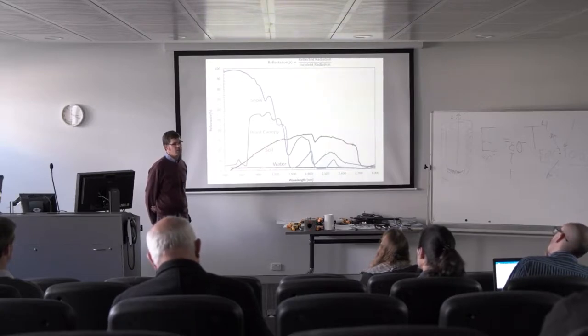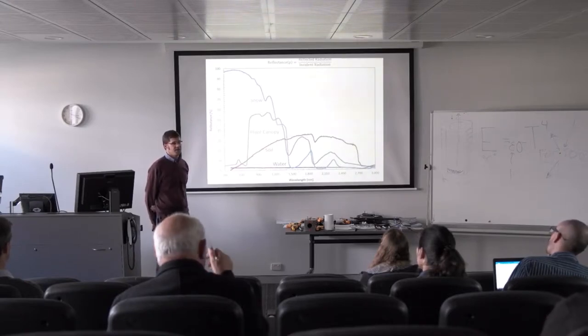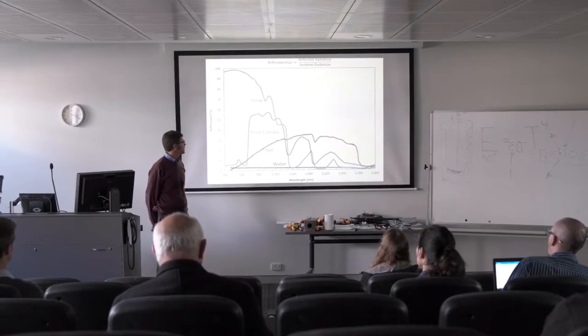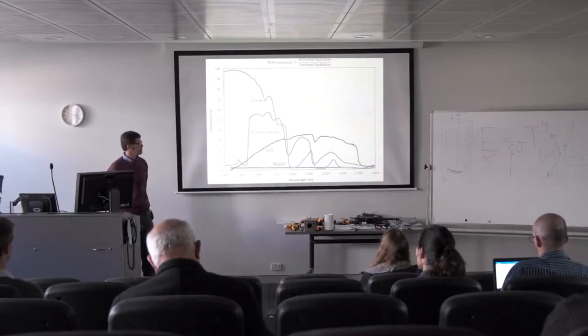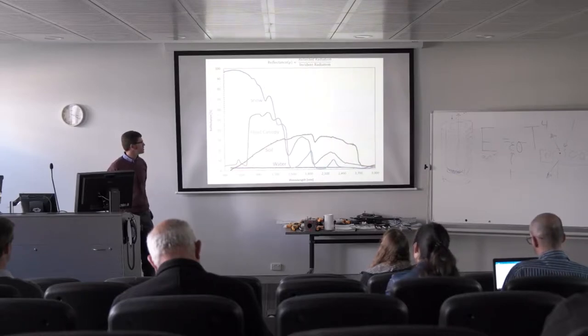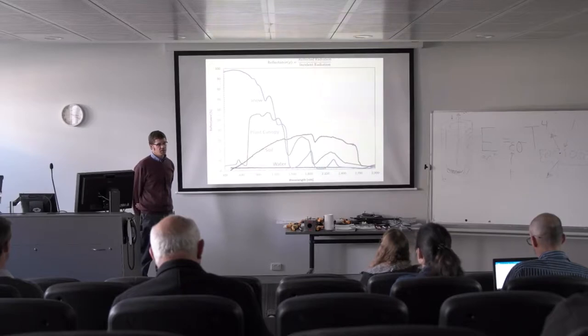One thing that sticks out immediately from this slide is we can use reflectance to characterize what's at the surface. I don't know that that's necessarily a major application because there are other ways of characterizing what's going on, but the reflectance signatures are very, very different when we move from one surface to the next.